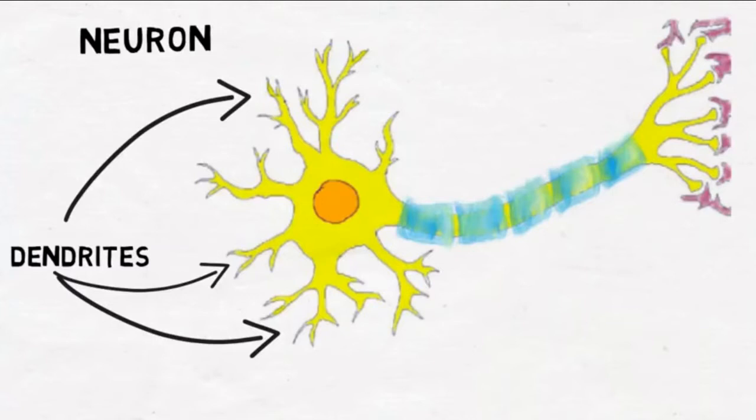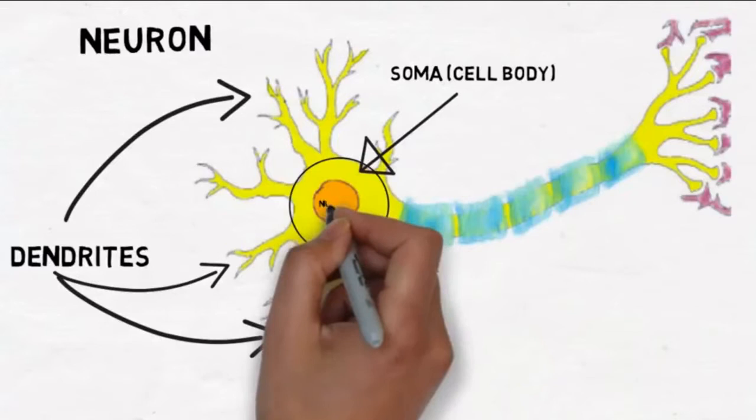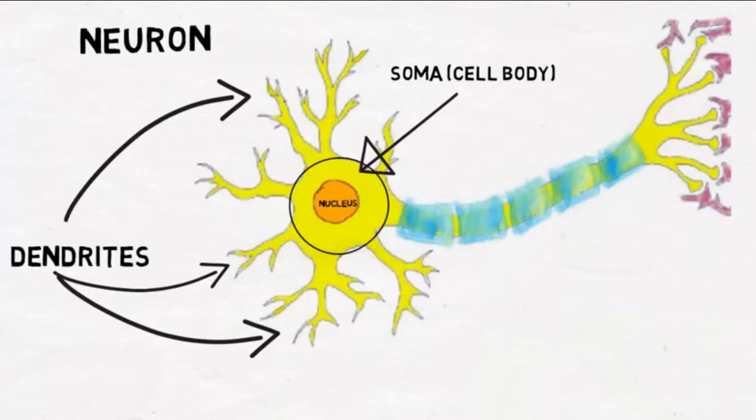Those signals picked up by dendrites cause electrical changes in a neuron that are interpreted in an area called the soma, or the cell body. The soma contains the nucleus, which contains the DNA or genetic material of the cell. The soma takes all the information from the dendrites and puts it together in an area called the axon hillock.